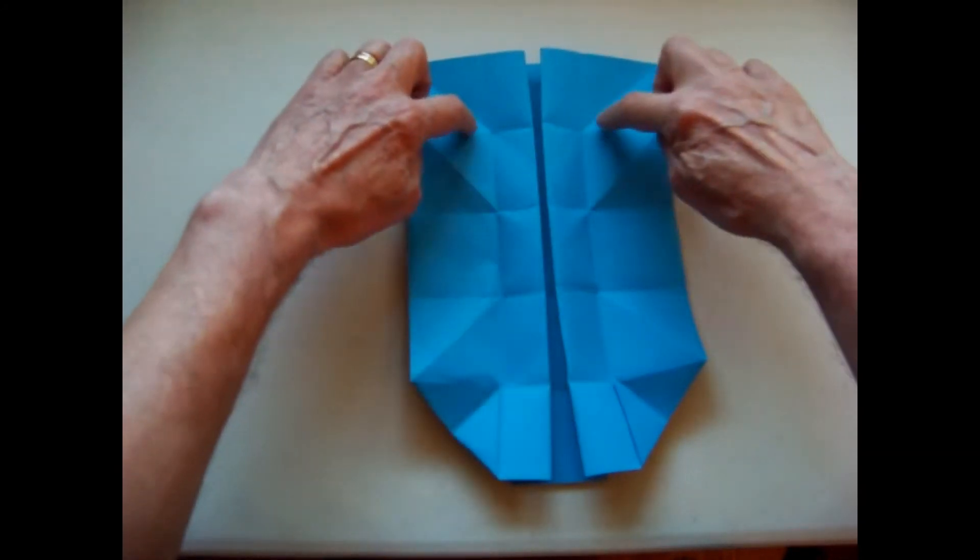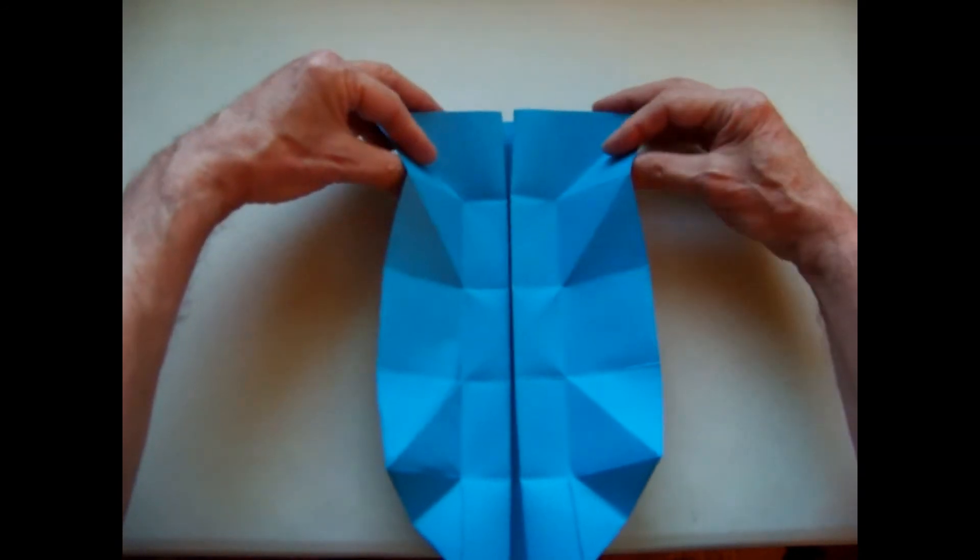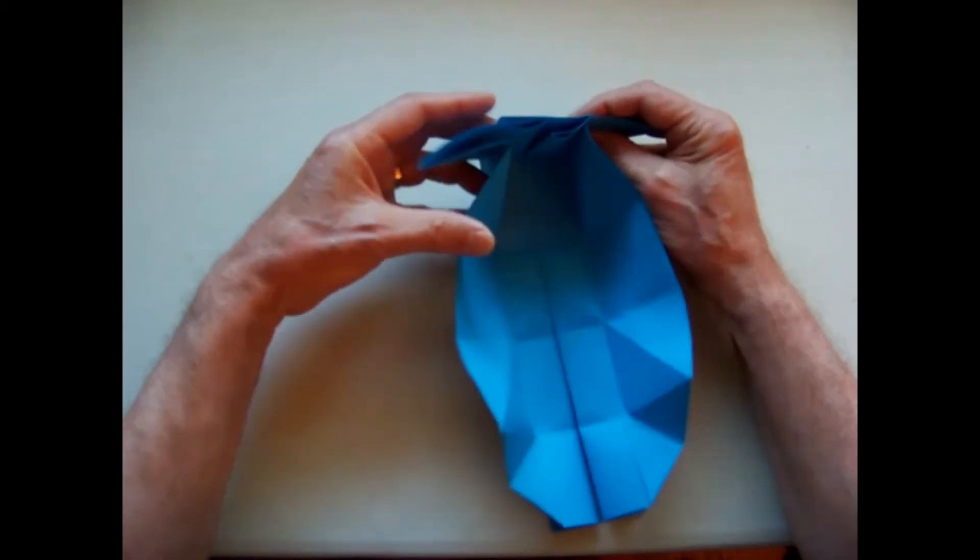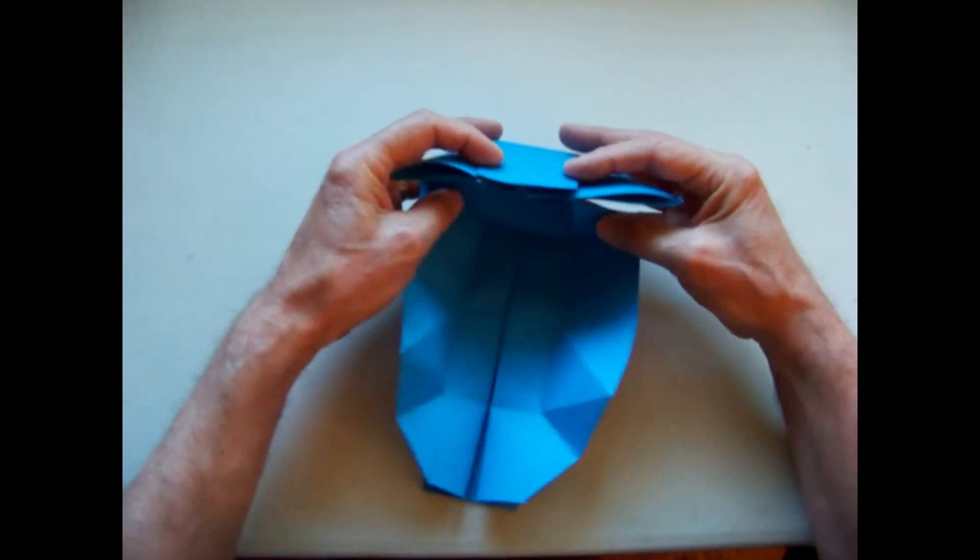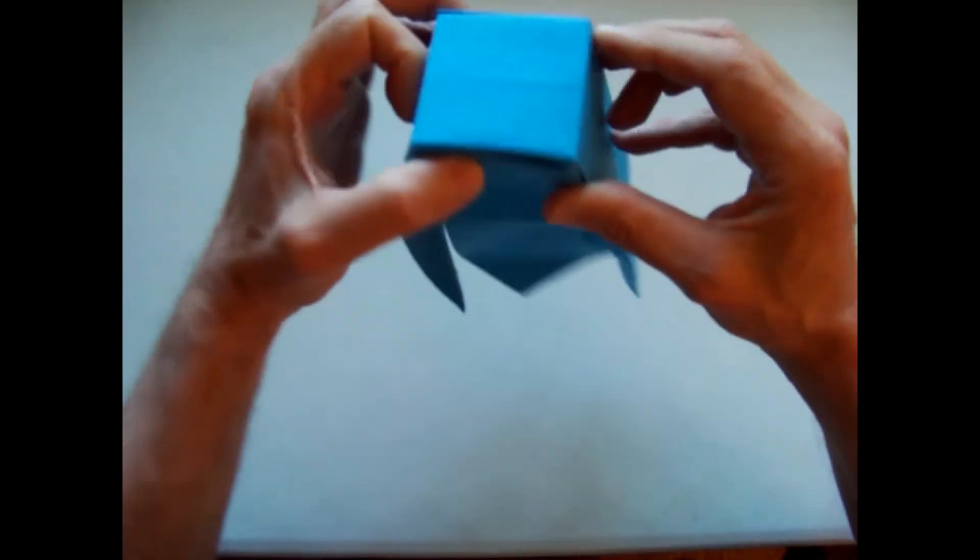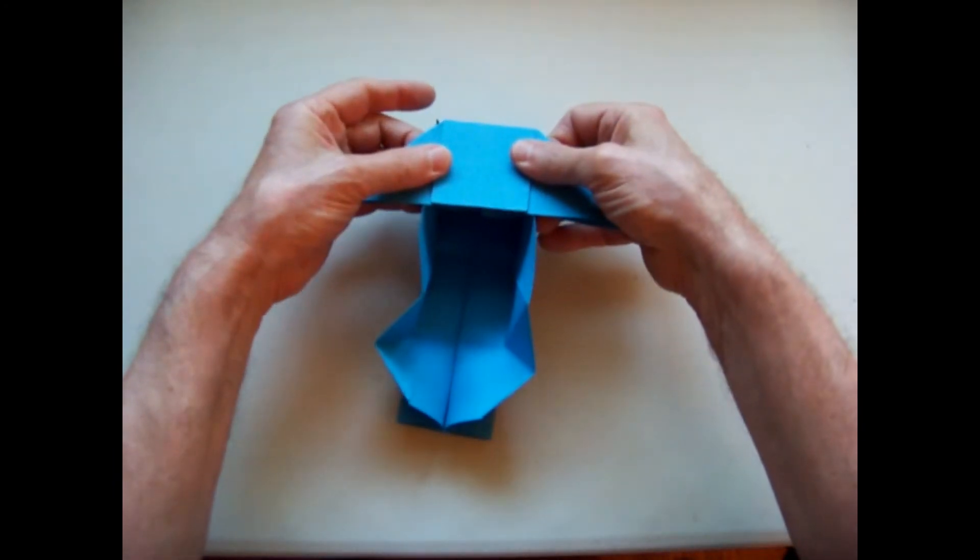We will start with the larger wings, which are these two large creases at the top. We bring those two creases together and we bring the cube up to form one side of the cube. Notice that the wings are sticking out on the side.